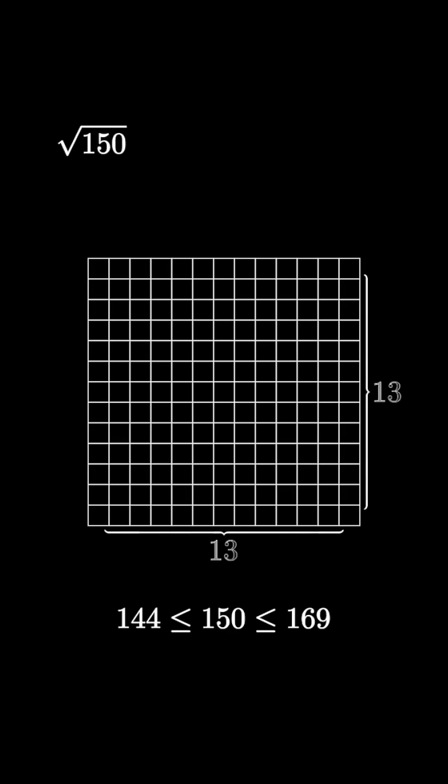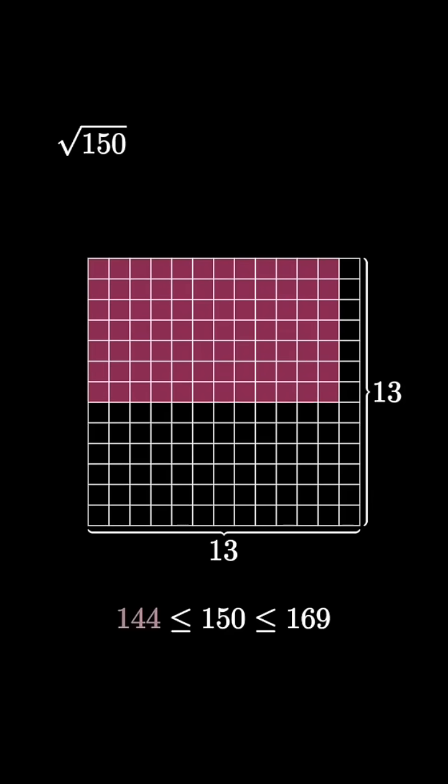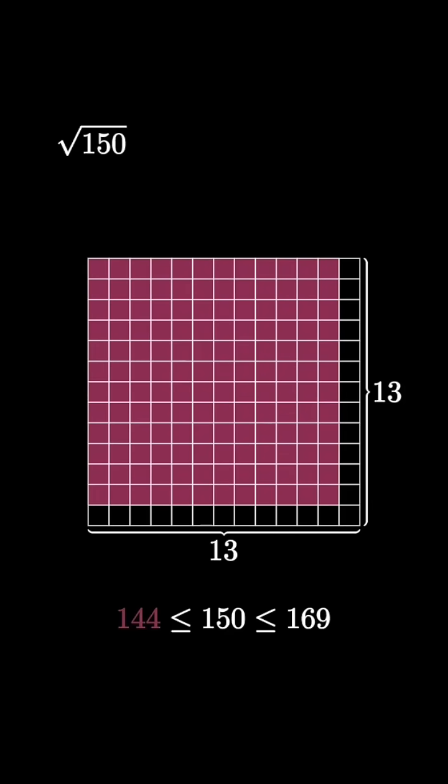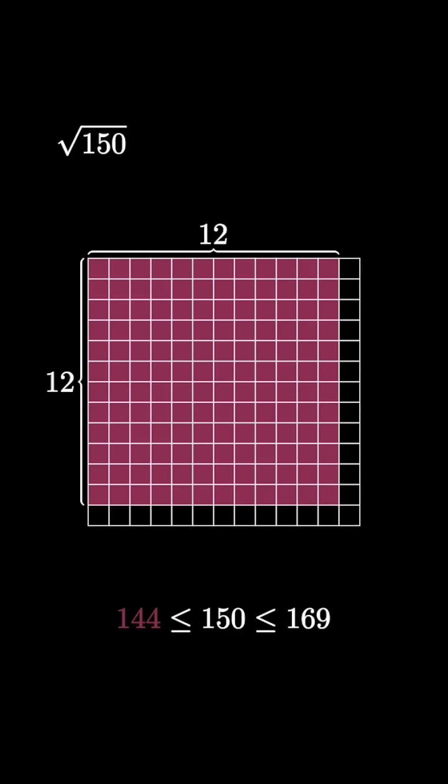So we draw a 13 by 13 grid enclosing 169 squares. In the upper left corner, we can shade 144 squares or a 12 by 12 grid, and that's less than 150, so the square root of 150 is at least 12.